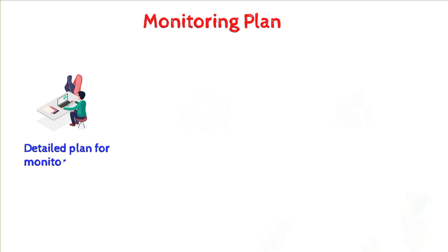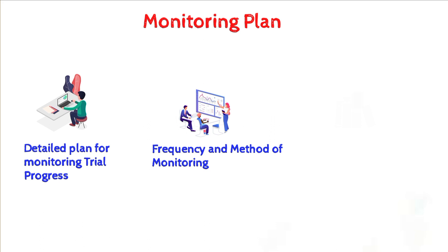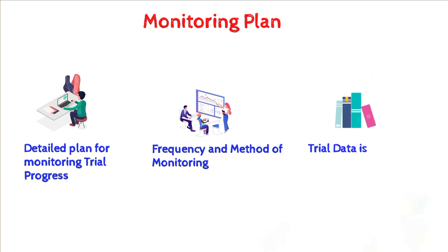The last document is the Monitoring Plan. It is a plan that outlines the strategy and procedures for monitoring the progress of a trial, including data collection, safety monitoring and quality assurance. The monitoring plan typically includes information on the study design, procedures and site, as well as the frequency and methods of monitoring. It also includes guidelines for monitoring adverse events, protocol deviations and other critical aspects. The plan is usually developed by the sponsor or CRO and is designed to ensure the trial is conducted according to the protocol with accurate and reliable data collection.